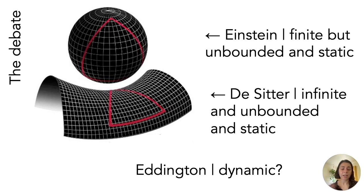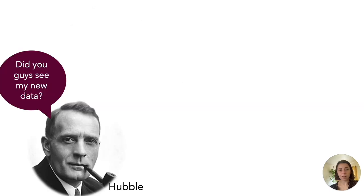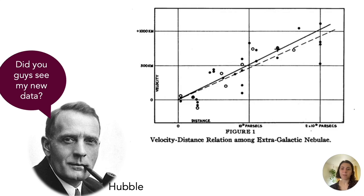Eddington argues for a dynamic solution — that the overall universe is changing through time. That said, neither Einstein nor De Sitter agrees with Eddington. So we have a case of multiple theories about how the universe is, but not enough data yet to support any of the three — until Hubble comes along. Hubble presents a pretty famous plot that has since been called Hubble's law.